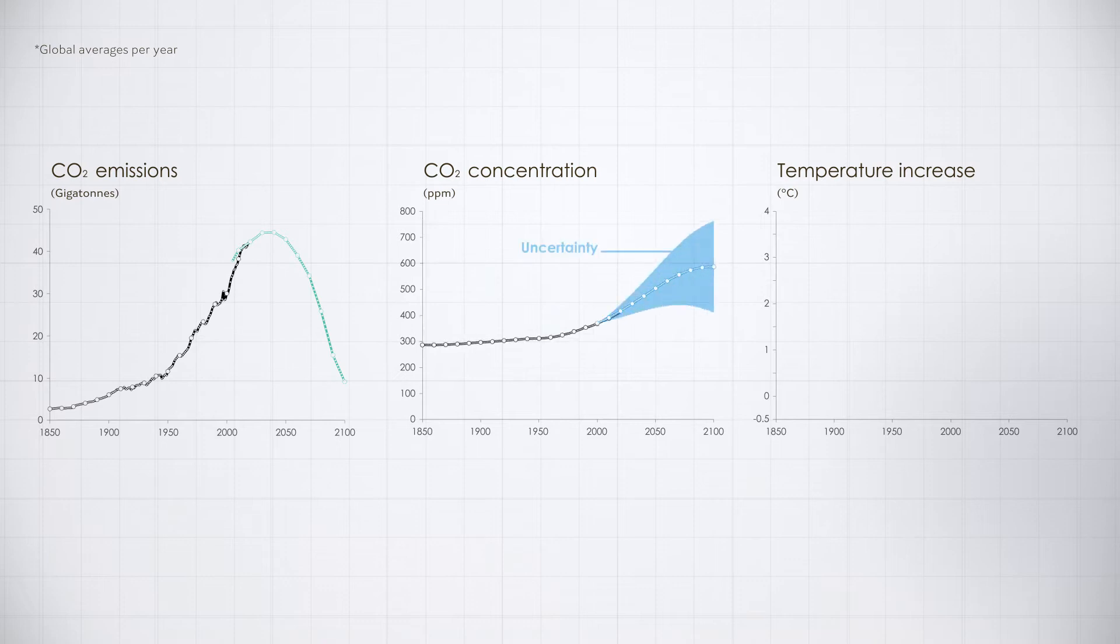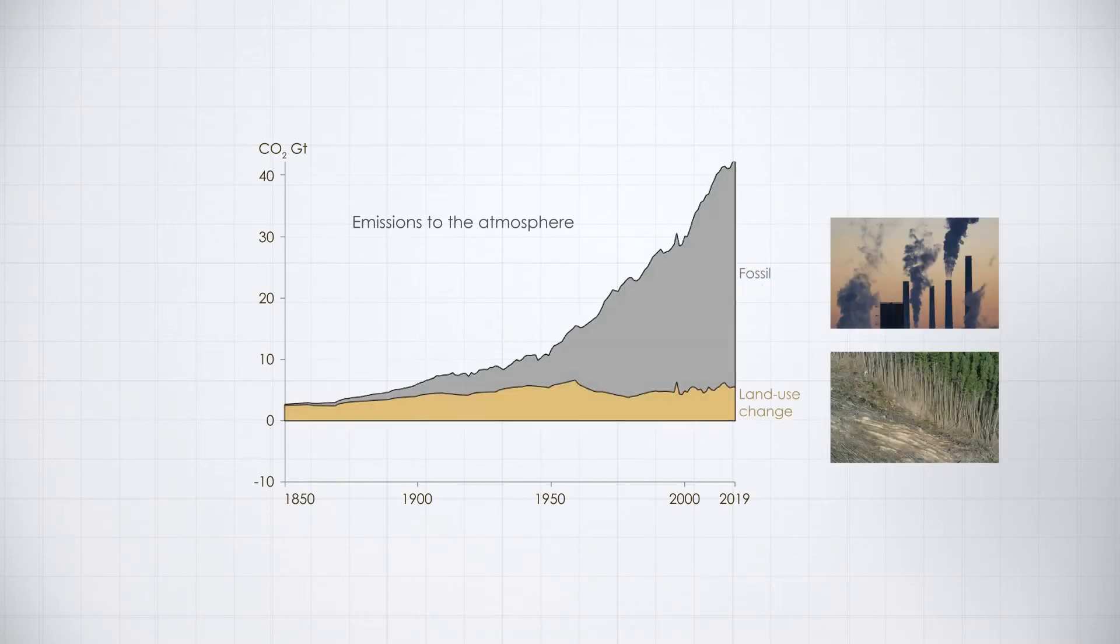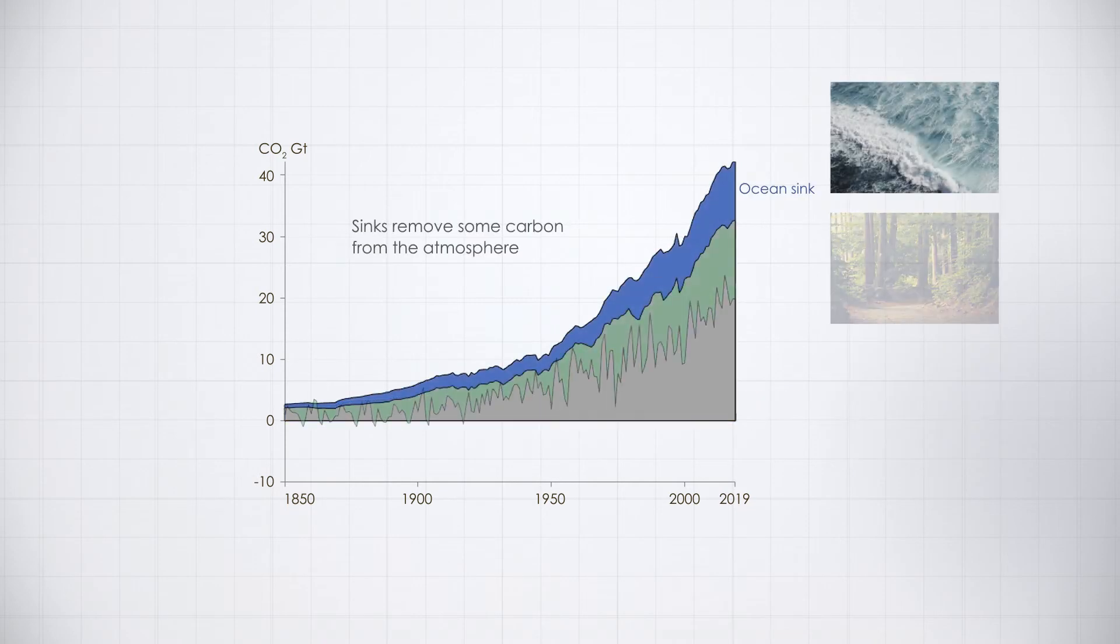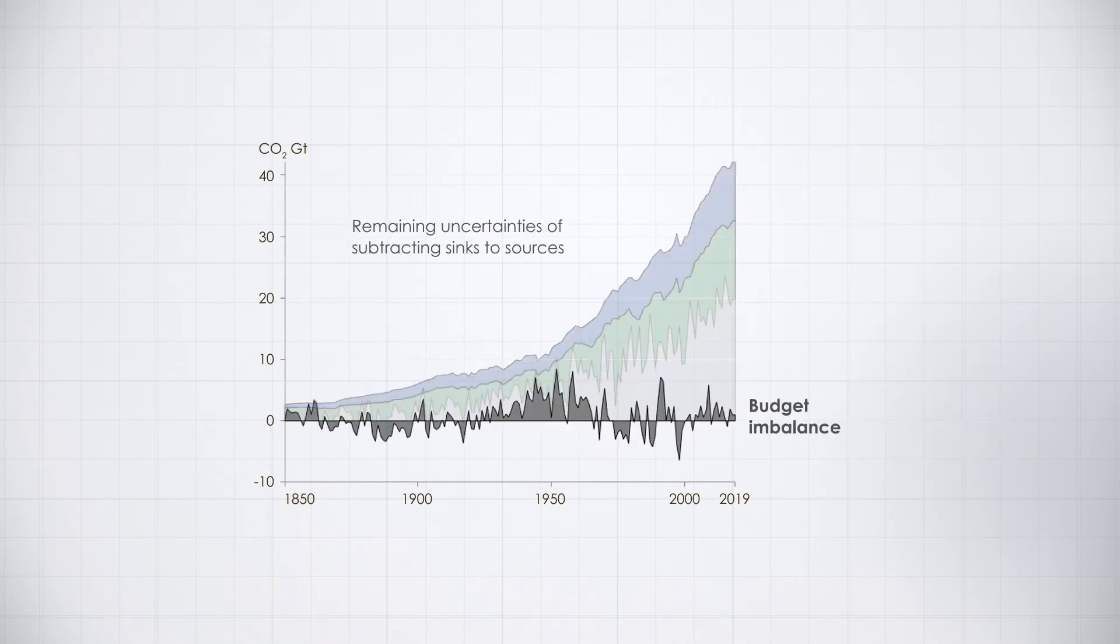Reducing uncertainties in the global carbon cycle will improve predictions of global temperatures for this decade and projections of climate change in the 21st century. We also need better knowledge of the carbon cycle, sources, sinks, and budget imbalance.